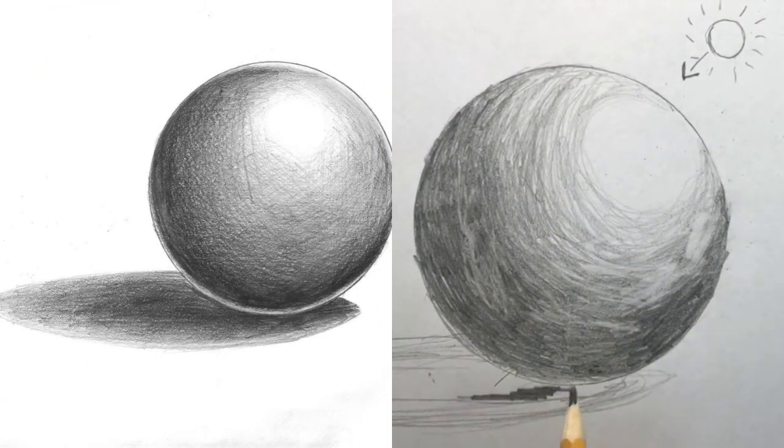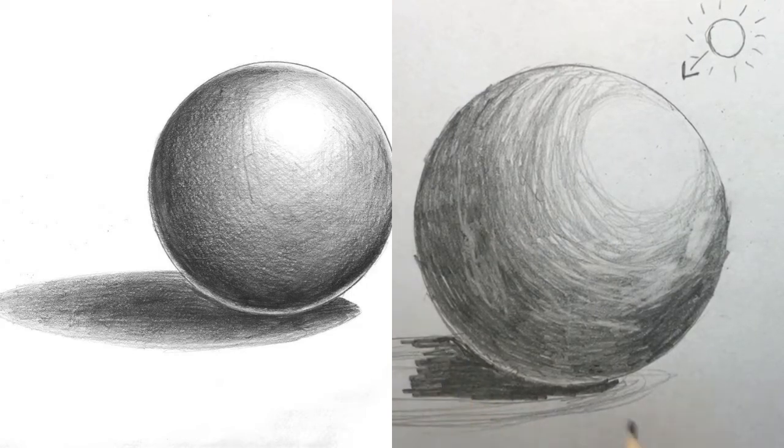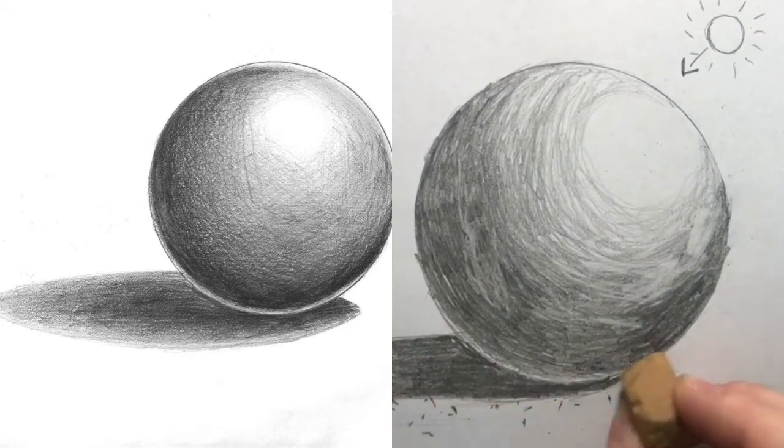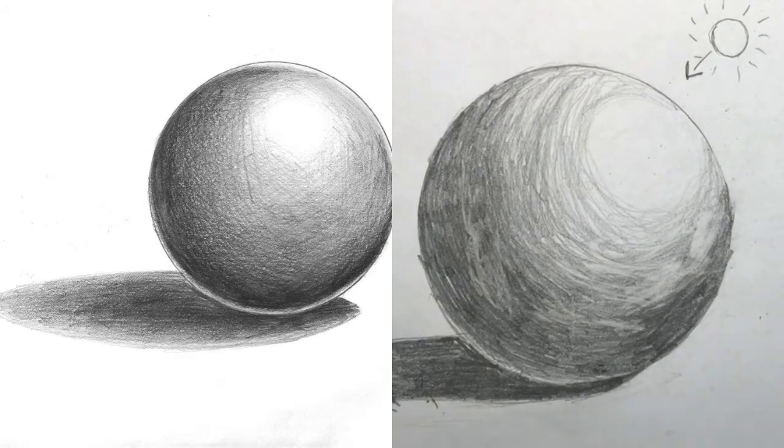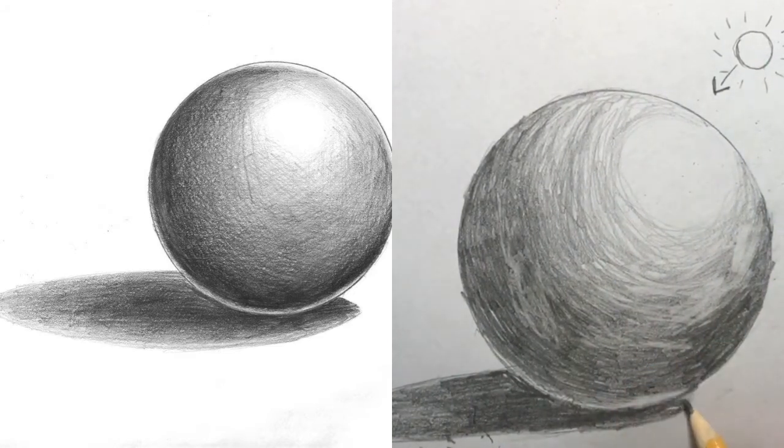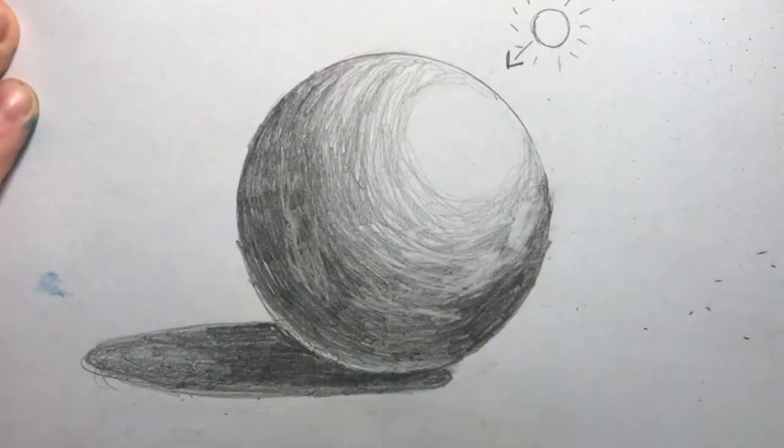Lastly is the cast shadow. If you look at the sphere on the left, notice that even in the shadow, there are different values. The darkest value is directly under the sphere. The further from the sphere, the lighter the cast shadow becomes. So I'm going to make sure that my drawing reflects that too. Watch how I put the finishing touches on my sphere.